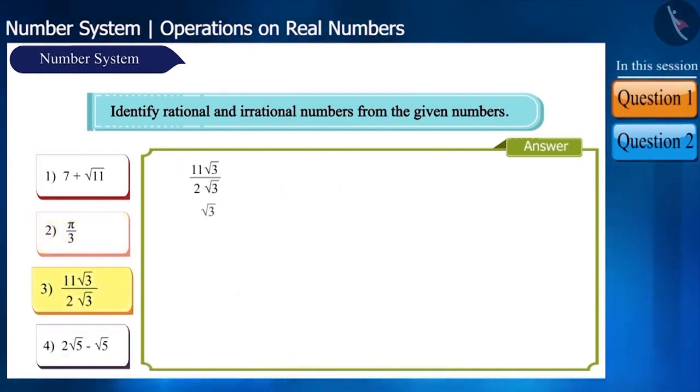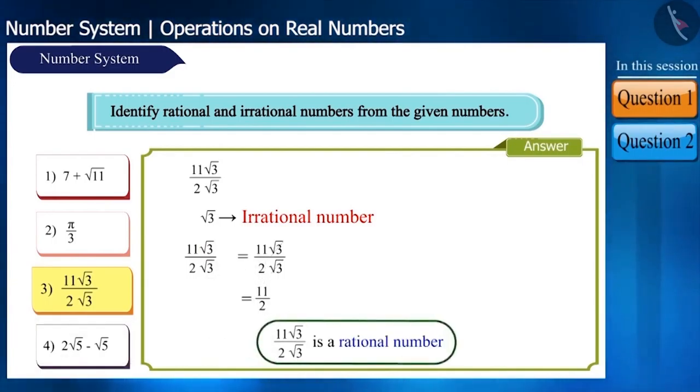In the third question, root 3 is an irrational number. But here, the numerator and the denominator both have square roots of 3. Hence, we can cancel the square roots of 3 and get 11 by 2. This is a rational number.